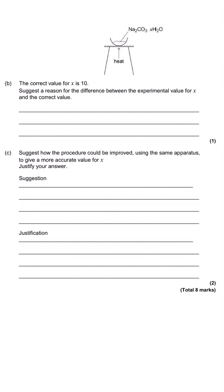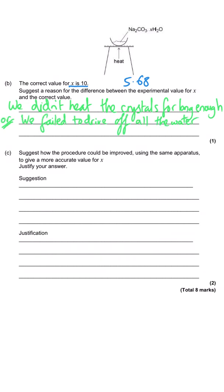The question finishes by asking us a couple of qualitative questions, so we're not needing to use any calculations. We are told that the correct answer for the water of crystallisation is actually 10. Now 10 is obviously a lot greater than our value of 5.68. What that means is there is more water inside the crystal structure than we thought there was. The most likely cause of this is that we didn't heat the crystals for long enough, and as a result we failed to drive off all of the water. In fact, you could say either of those two things to get the one mark.